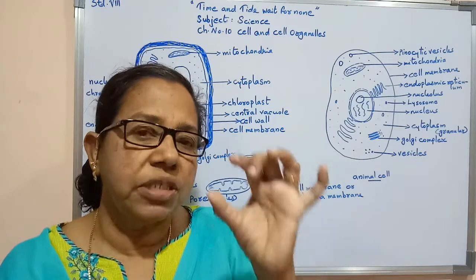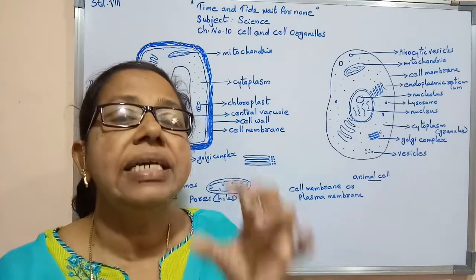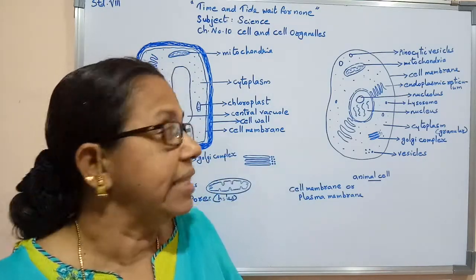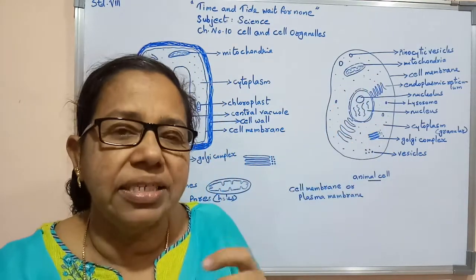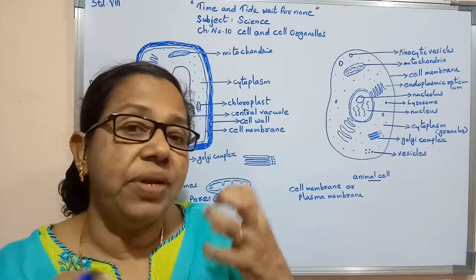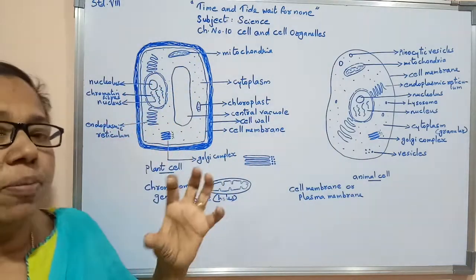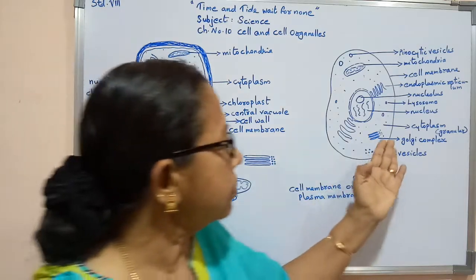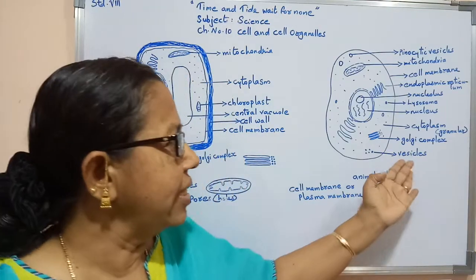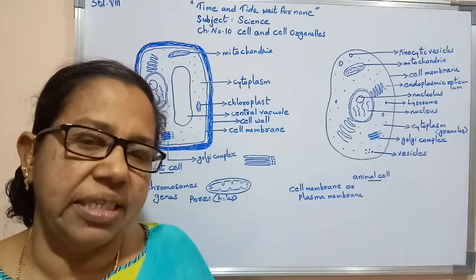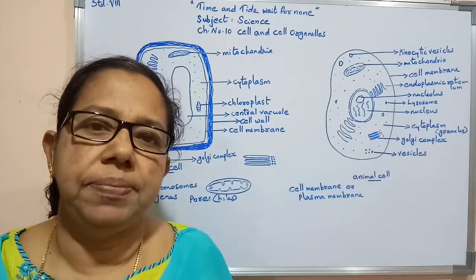The different organelles of the animal cell are: pinocytic vesicles, mitochondria, cell membrane, endoplasmic reticulum, nucleolus, lysosome, nucleus, and chromatin fibers — which later transform into chromosomes. Inside the chromosomes, segments are present and each piece has a special function; those small pieces are called genes. Cytoplasm in the animal cell is in a granular and thick condition, while in the plant cell cytoplasm is very thin. Also present are the Golgi complex and vesicles, which have a transport function — transporting materials from one part of the cell to the other.